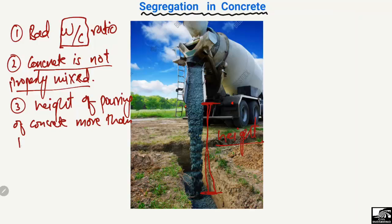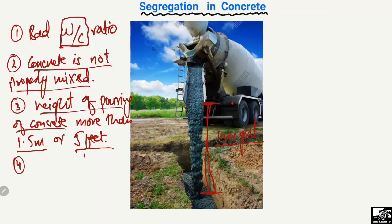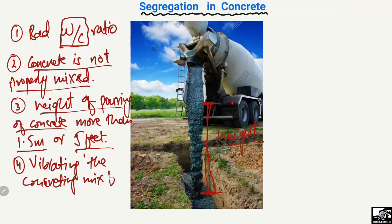When the pouring height is more than 1.5 meters or 5 feet, there are high chances of segregation. To avoid this, the height of pouring concrete should always be kept less than 1.5 meters or 5 feet. The fourth reason segregation occurs is vibrating the concrete for too long a time. If you vibrate the concrete during mixing for a long time, it can separate the particles from each other and result in segregation.